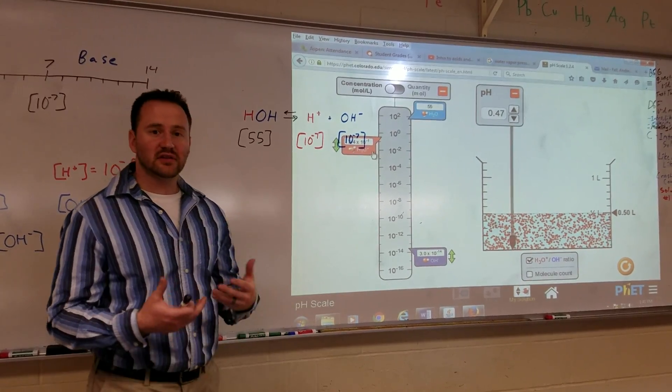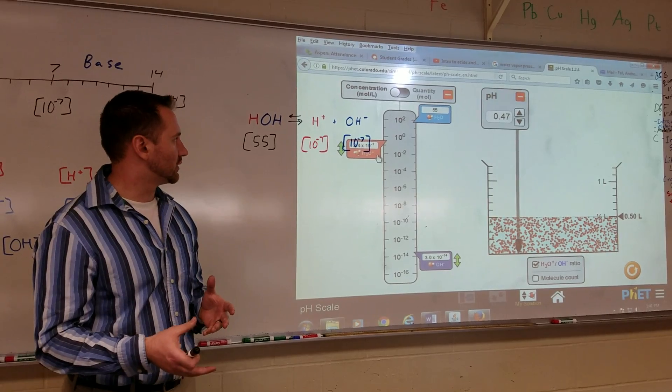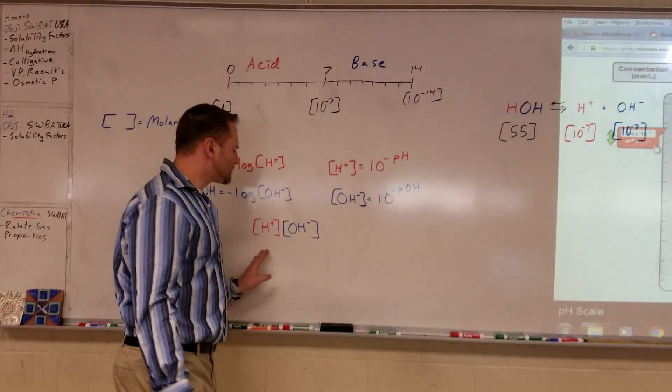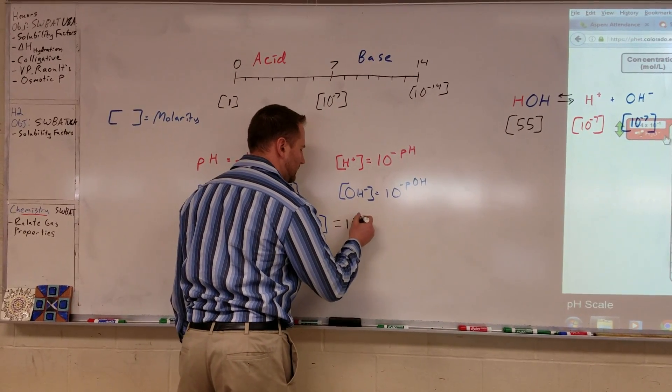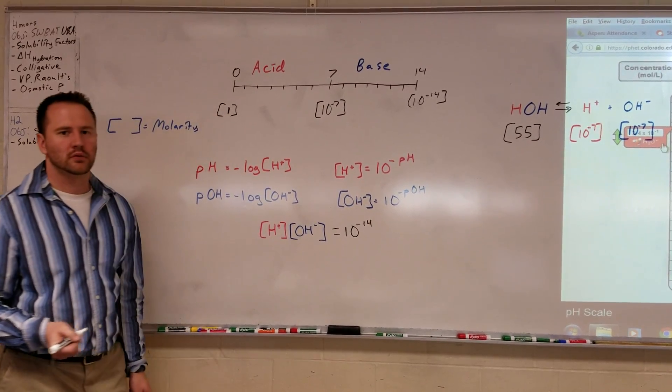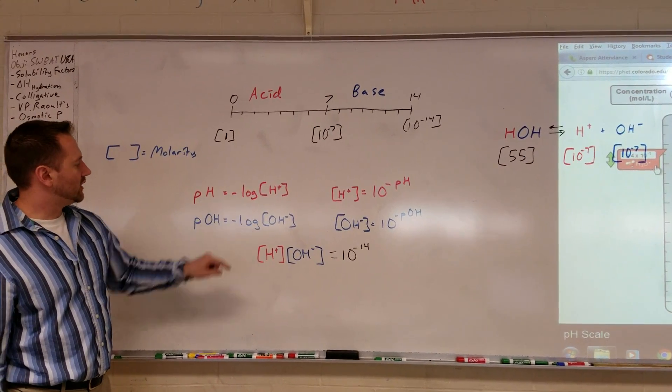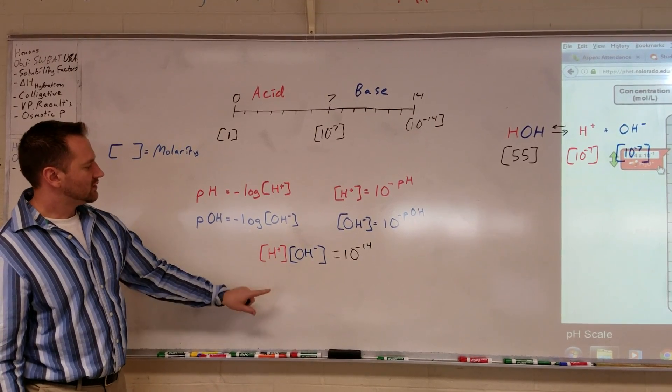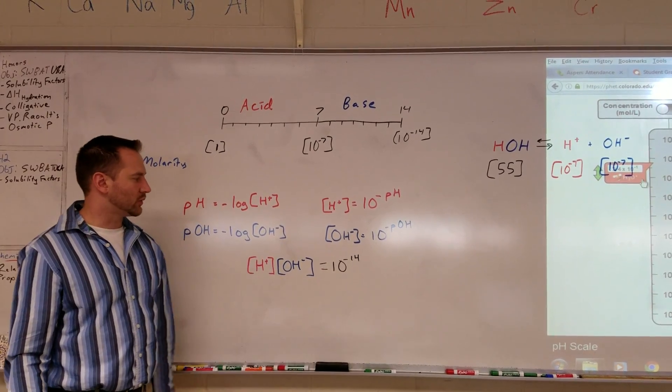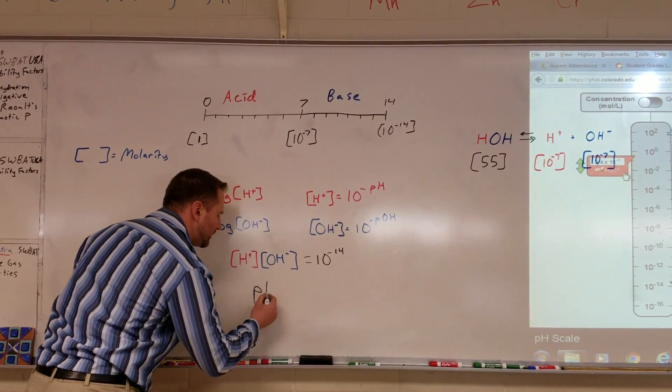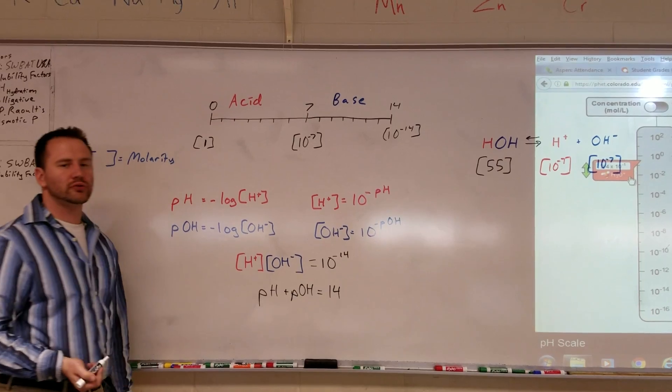As this concentration increases, the amount of hydroxide ions decrease accordingly. The reason is that when you have a buildup of hydrogen ions around hydroxide ions, they neutralize each other to form water. So an acidic solution will eliminate the hydroxide ions floating in solution. However, the concentration of hydrogen times the hydroxide ion is always equal to 10 to the negative 14.